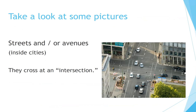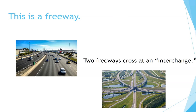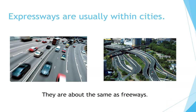Take a look at some pictures. Streets and/or avenues are inside cities — they cross at an intersection. This is a freeway. Two freeways cross at an interchange. Expressways are usually within cities and are about the same as freeways.